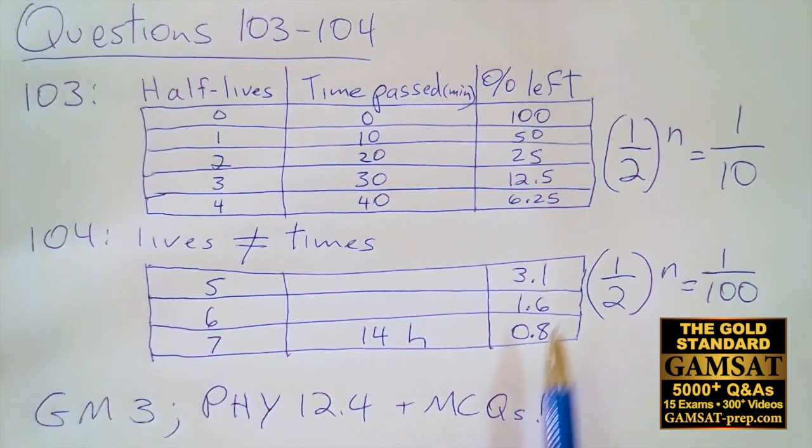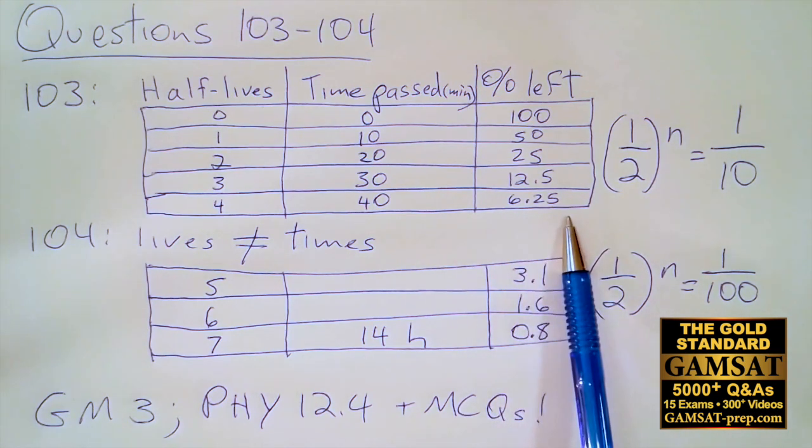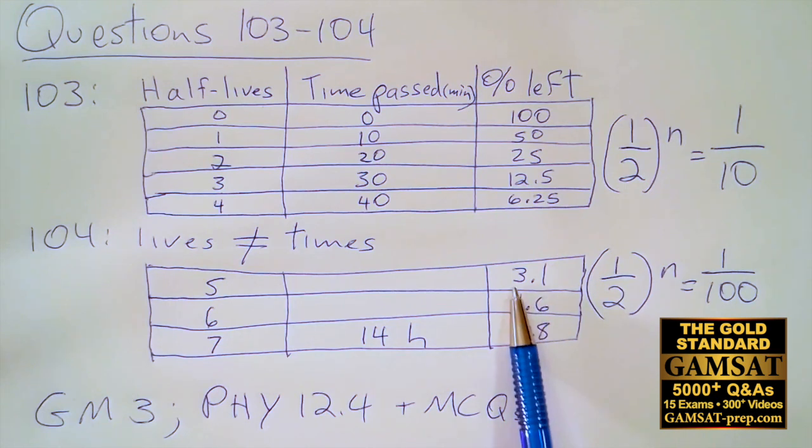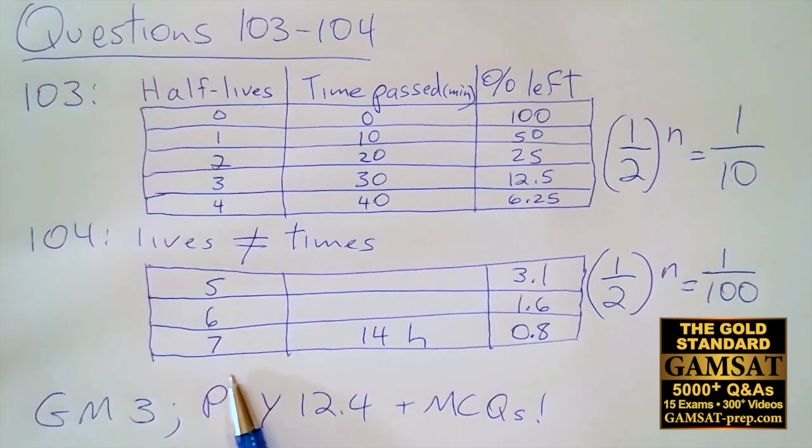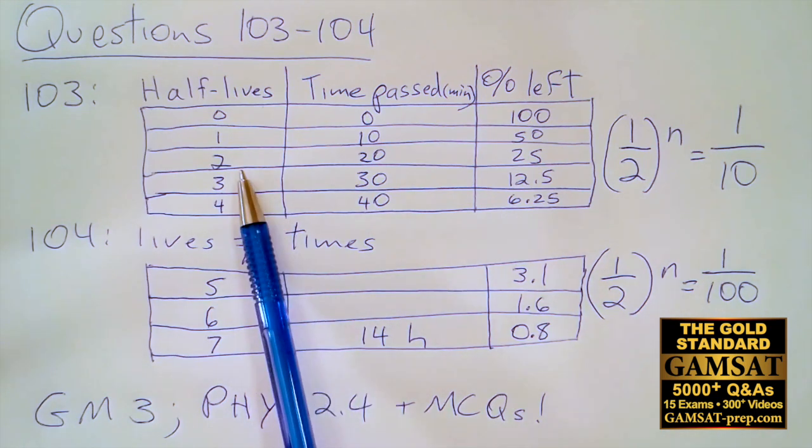One technique is we'll just continue the table to see what 1% would be. Half of 6.25 is 3.1, half of that is around 1.6, half of that is around 0.8. So in terms of half-lives, we went from 5, 6, to 7, and this is how much was remaining in the body, between 13 and 14 hours.